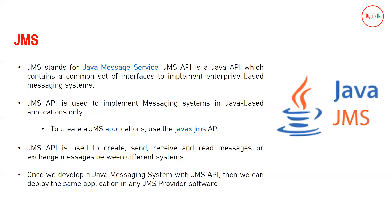JMS stands for Java Message Service. The JMS API is a Java API that contains a common set of interfaces to implement enterprise-based messaging systems. It is specifically used in Java-based applications to exchange information. You write code using the JMS API so that one application can send a message and a different application can receive it. The JMS API is used to create, send, receive, and read messages between different applications or systems.